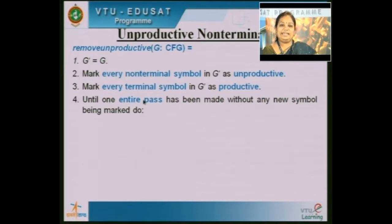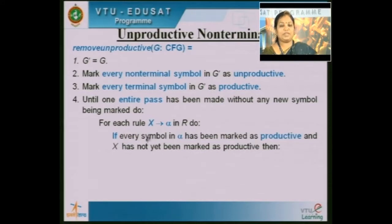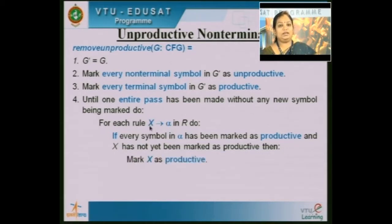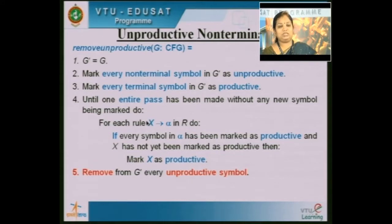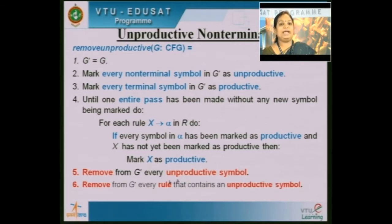Once marked, repeat until one entire pass has been made without any new symbol being marked. For each rule X → alpha in the rule set, check if every symbol in alpha has been marked as productive. If all symbols in alpha are productive and X has not been marked as productive, then mark X as productive. After checking all rules, you are left with some unproductive symbols. Remove all those unproductive symbols and their associated rules.